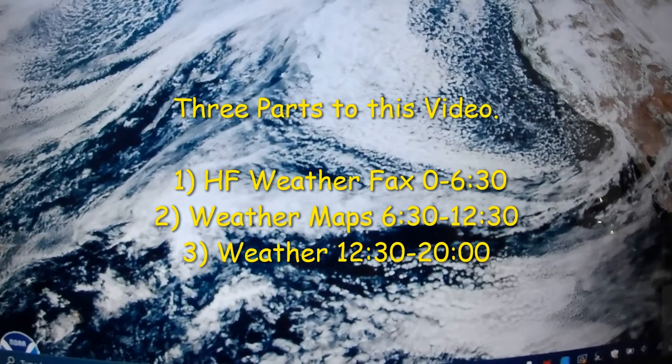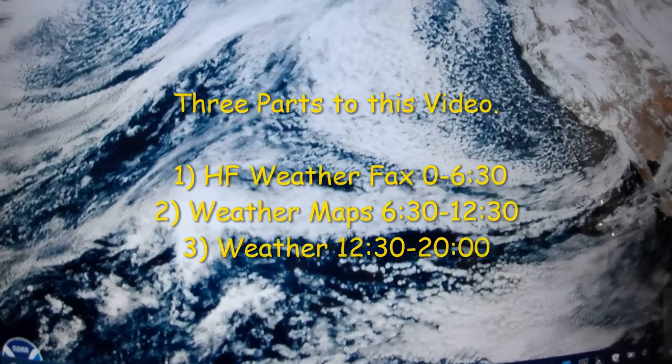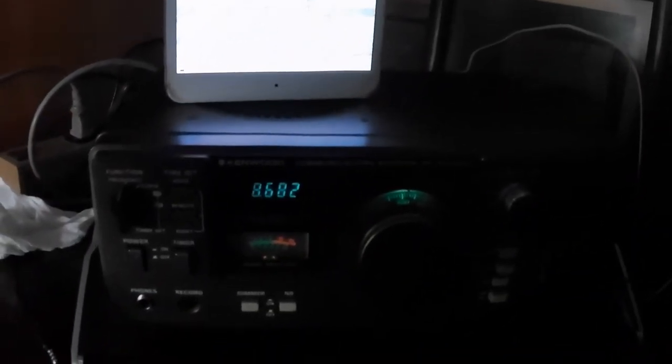So the equipment we're going to need is a shortwave radio, a computer system, and some software. And the software I'm running is by Black Cat, and it's called HF Weather Fax. It's downloadable. I'll provide a link in the description below. It runs about $20 and well worth it.